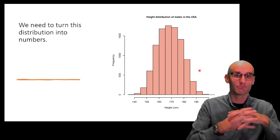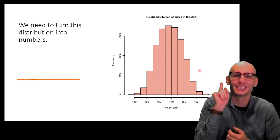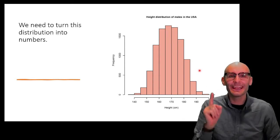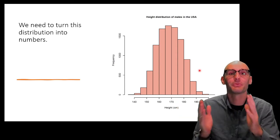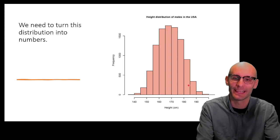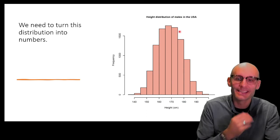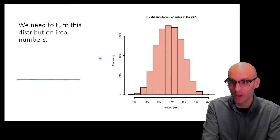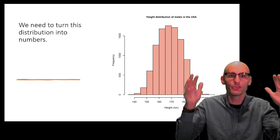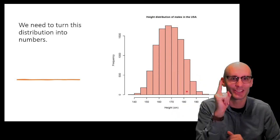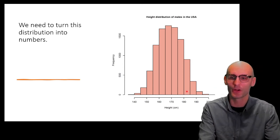A test statistic turns all your data and your research question into one number. To get it down to one number, we first have to start reducing our data into fewer numbers. There are actually many numbers in this distribution — how many males are at each height. So we need to turn this distribution into numbers and keep reducing down the data until we eventually end up with one number, which is our test statistic — the Z-score. That's what we're going for.